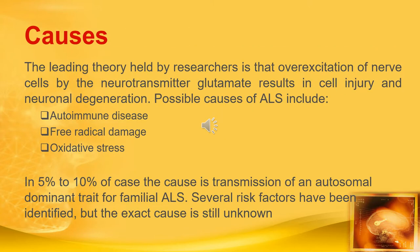Now let's talk about the causes. The leading theory held by researchers is that overexcitation of nerve cells by the neurotransmitter glutamate results in cell injury and neuronal degeneration. Possible causes of ALS include autoimmune diseases, free radical damage, and oxidative stress. In 5% to 10% of cases, the cause is transmission of an autosomal dominant trait for familial ALS.